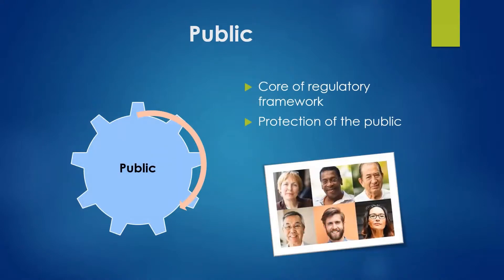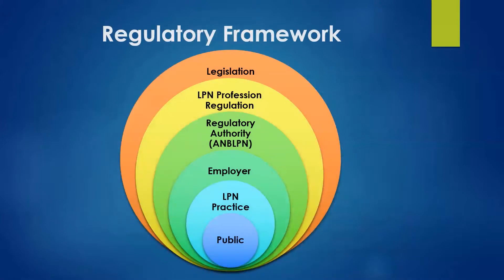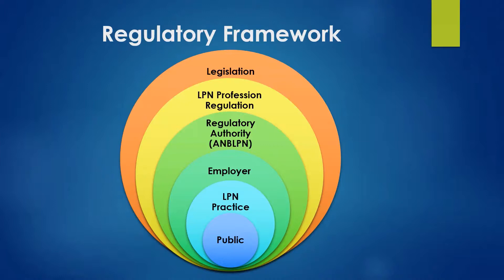And then lastly, but most importantly, we have the public. It's the public that are at the core of that regulatory framework, and the public is why these regulatory authorities exist. We're mandated to lead and regulate the profession to ensure safe and competent practice by our members. There are a lot of different components of regulation, and it's important that we as LPNs understand what our responsibilities and accountabilities are as licensed professionals. The regulatory authority doesn't exist just to make you have to do certain things every year — we exist so that we can help guide excellence in our profession, help grow the profession, help guide your practice, and ensure that we can keep that privilege of self-regulation. Being a self-regulated professional is definitely a privilege that we as LPNs don't want to lose.